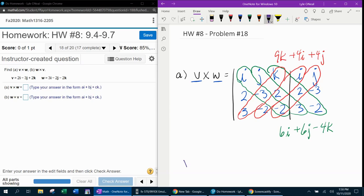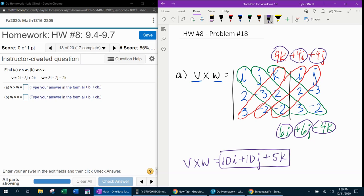And then for V cross W, by combining like terms. So 6I plus 4I gives me 10I. Next, I've got 6J plus 4J gives me 10J. And last but not least, we have 9K minus 4K, which is a plus 5K. And so there is the cross product, V cross W.